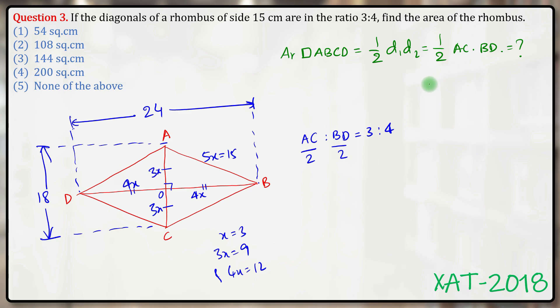Therefore, half AC into BD equals half times 18 times 24. 24 times 9 is 216, therefore 216 is our answer, the area of the rhombus, which is none of the above.